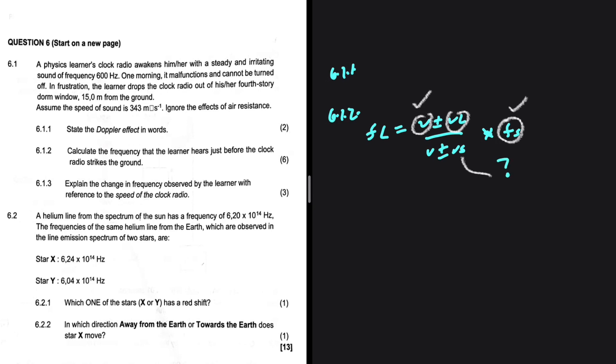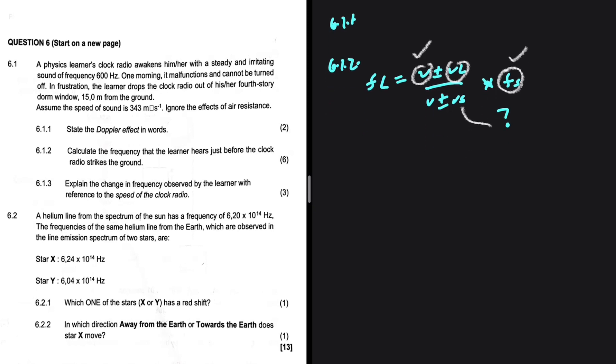We want the velocity of the clock before, or just as it strikes the ground. Let's gather our information and see which equation we need to use. We have the displacement, which is 15 meters. We have our acceleration, obviously 9.8. We have VI, which equals zero because the learner dropped the clock. And what else do we have? I think that is all we need. We are looking for VF.